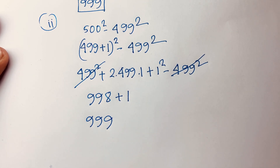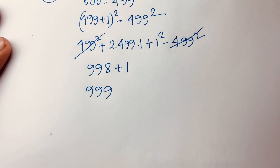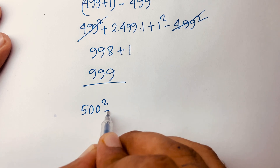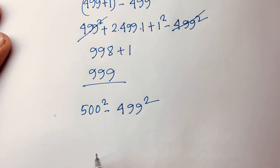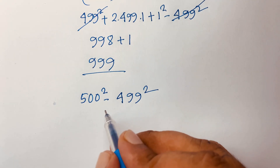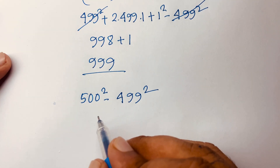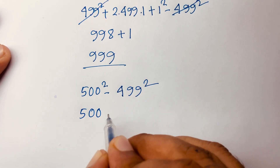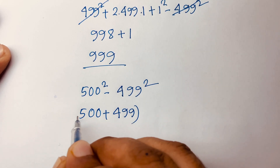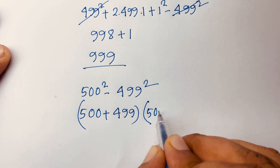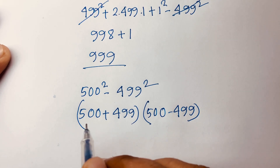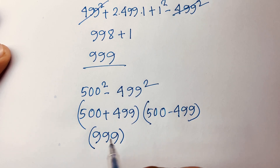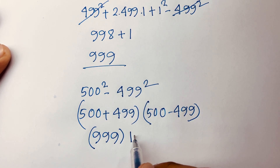Now I solve this question using a third method. Our question is 500 square minus 499 square. According to the algebraic rule, a square minus b square equals (a plus b) times (a minus b). Applying this: (500 plus 499) times (500 minus 499) equals 999 times 1, which equals 999. This is our final answer.